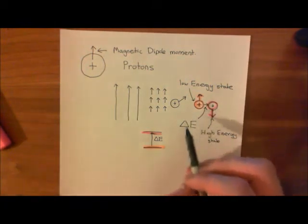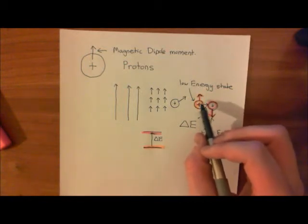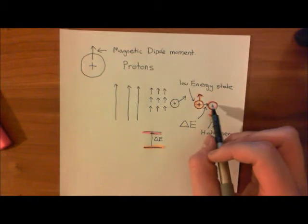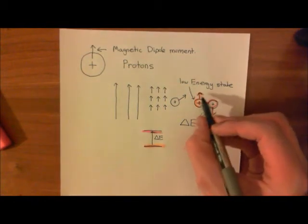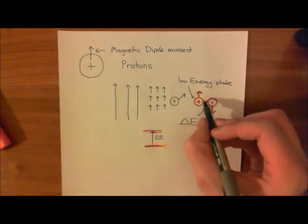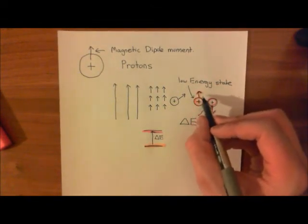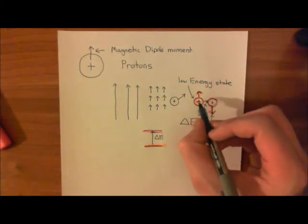So there is an exact energy that you need to gain in order to move from that state to that state. Now, basically, what you can do is, if you want to try and make this transition, what you can do is you can expose your proton, which will be in the low energy state, ideally, to a certain amount of radiation.